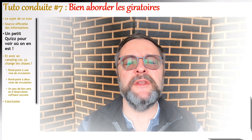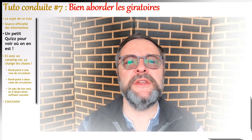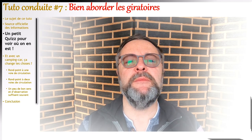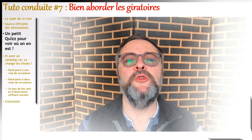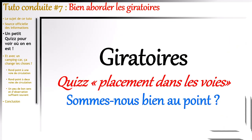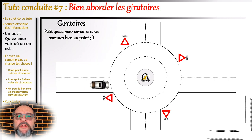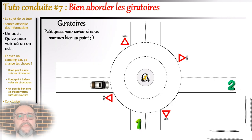Dans ce quiz, on va avoir deux cas de figure : les giratoires de petite taille avec une seule voie de circulation et quatre sorties possibles, et des giratoires de plus grande taille avec deux voies de circulation et également quatre sorties possibles. Pour ce quiz, on ne va pas particulièrement parler de camping-cars — la partie camping-cars arrivera en deuxième partie — mais ces éléments sont applicables aussi au camping-car. Les sorties sont matérialisées par des numéros très visibles : 1, 2 ou 3.